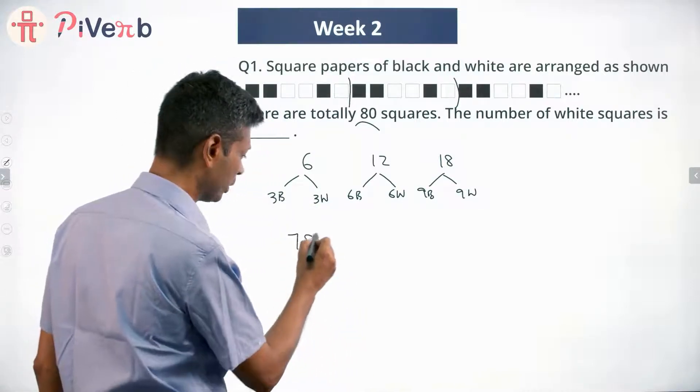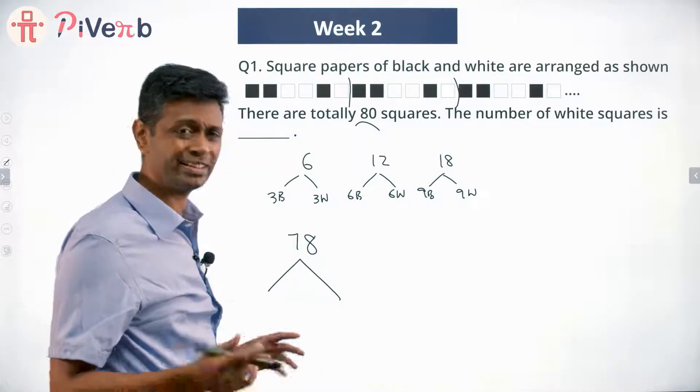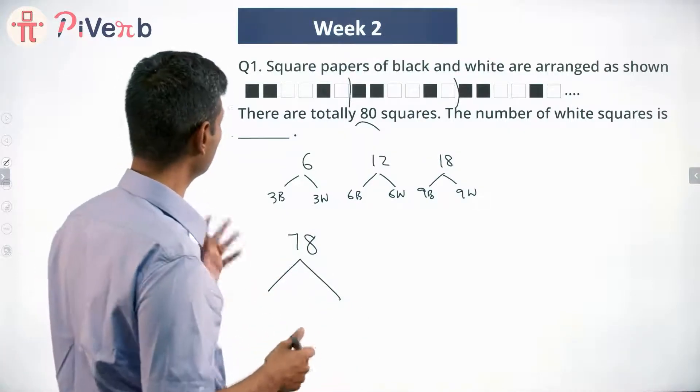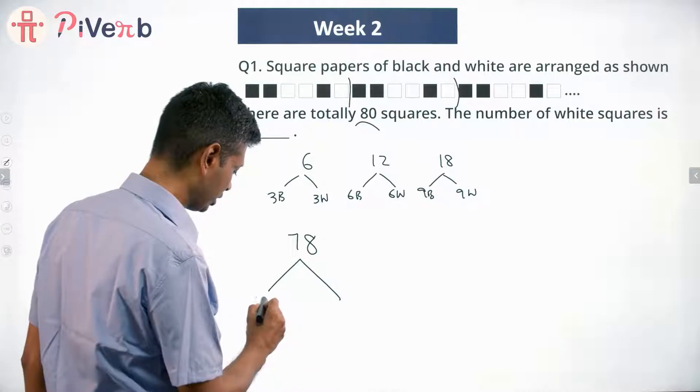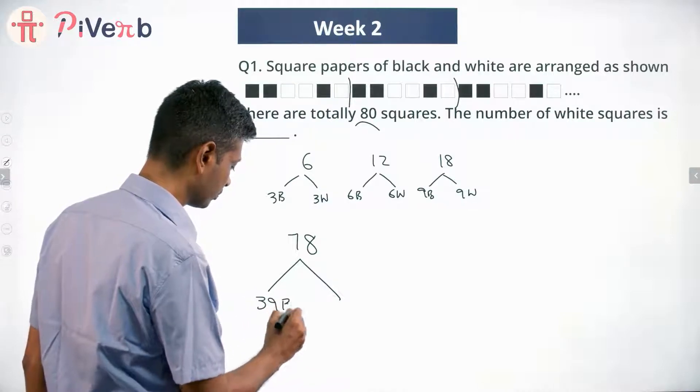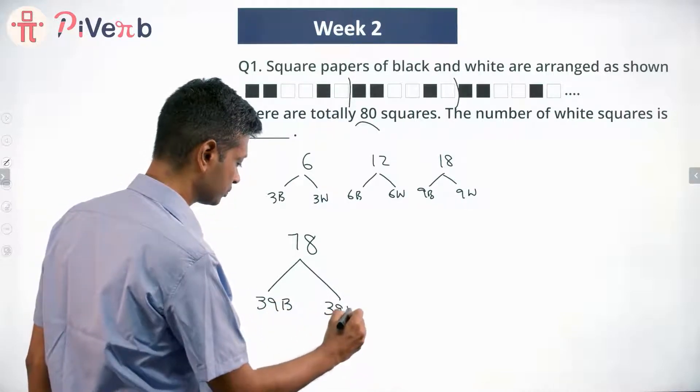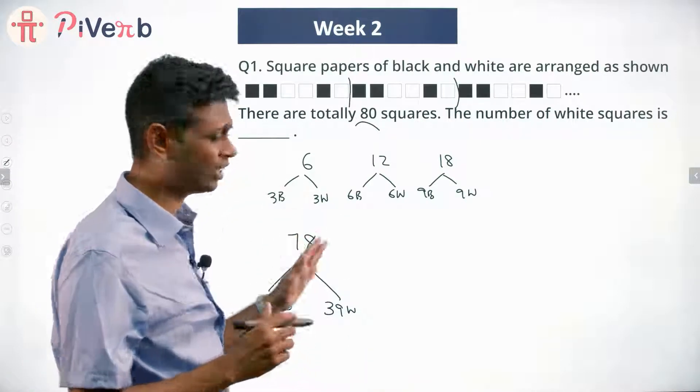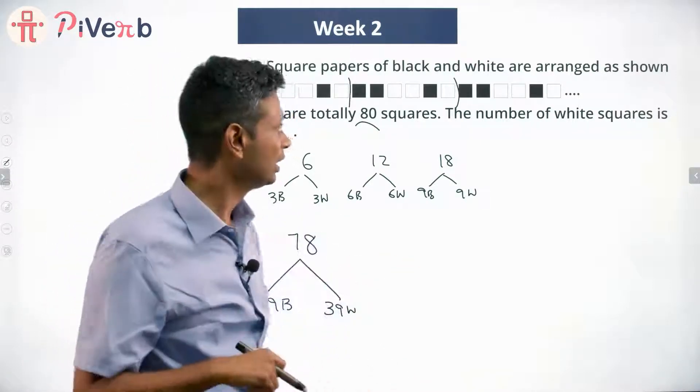I'll do it with 78. So I'm going to think about the first 78 squares. This is 13 sets of six. In each six, there are three blacks and three whites. 13 into 3 is 39 blacks and 39 whites. Lovely.